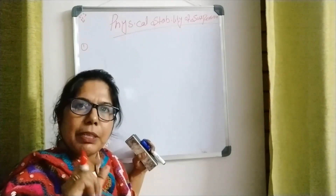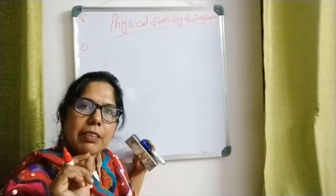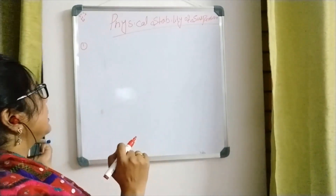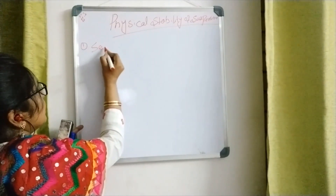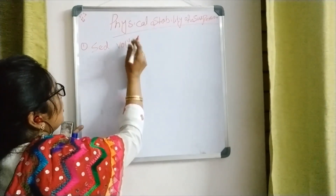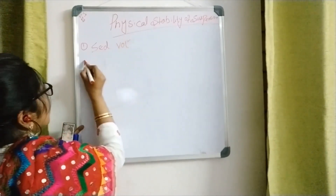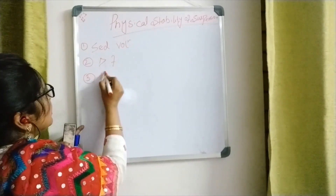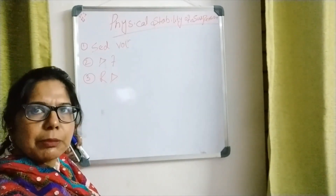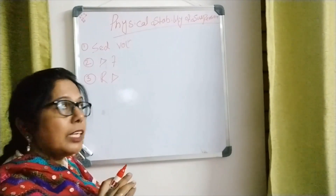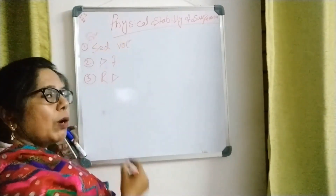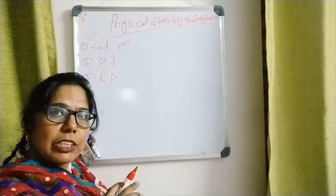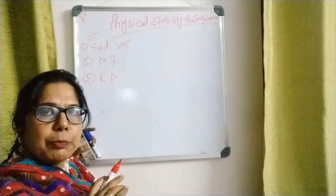This is about the physical stability of suspension. Quantitatively, the physical stability of suspension can be measured by three parameters. The first parameter is sedimentation volume, the second parameter is degree of flocculation, and the third parameter is redispersibility. These are quantitative measurements of physical stability of suspension.